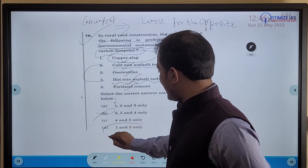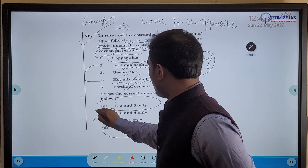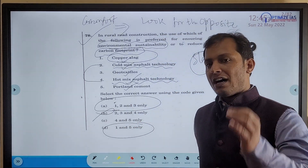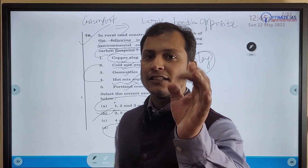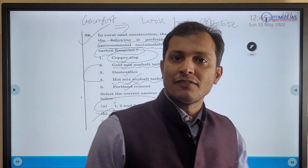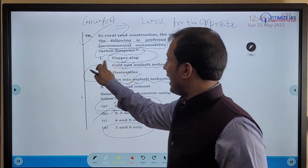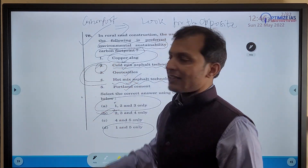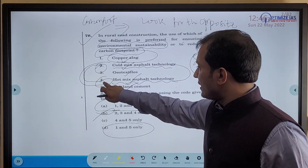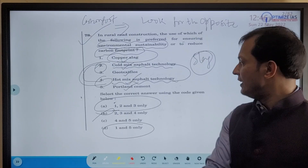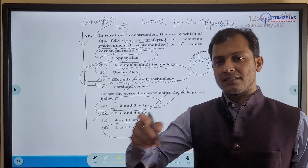So the answer can be '1 and 5' or '1, 2, and 3.' Here again you apply the technique: look for the opposite. I have seen the trend in UPSC that whenever there are two statements which are opposite of each other, at least one will be in the answer. So we can safely say that either 2 or 4 has to be in the answer — which means the answer is safely '1, 2, and 3.'